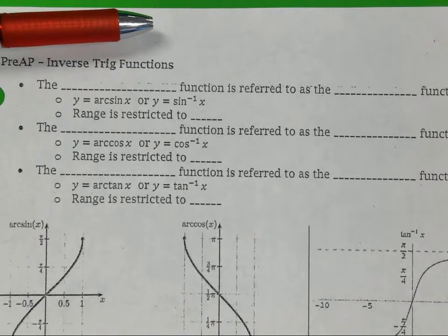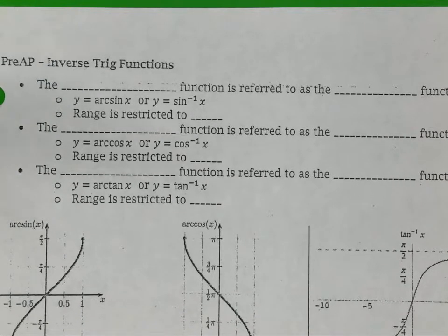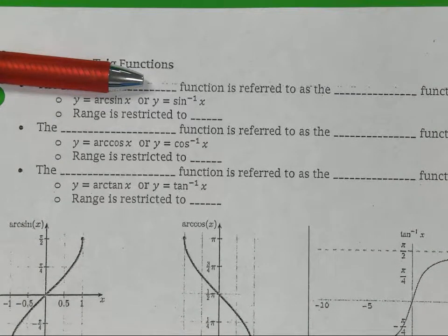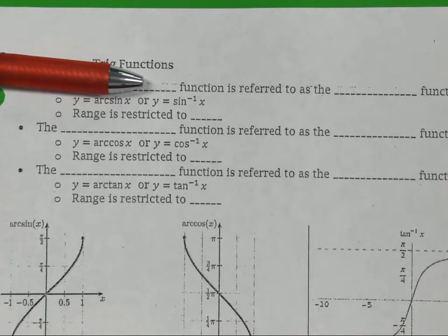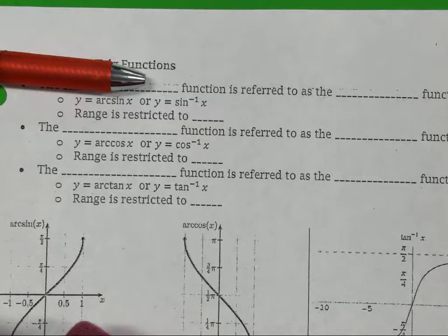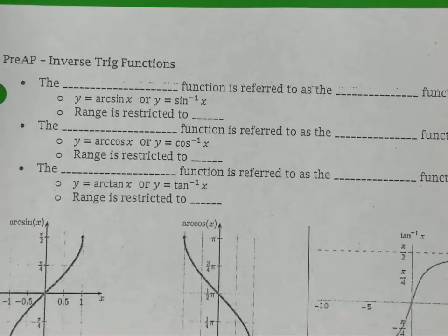It has to be one-to-one! One-to-one means none of your x's or none of your y's repeat. How do you know something was one-to-one? It passed the horizontal line test. But think about a sine and cosine graph — does it pass the one-to-one test? No. So mathematicians restricted it to a certain area to make it one-to-one so everything could have an inverse.